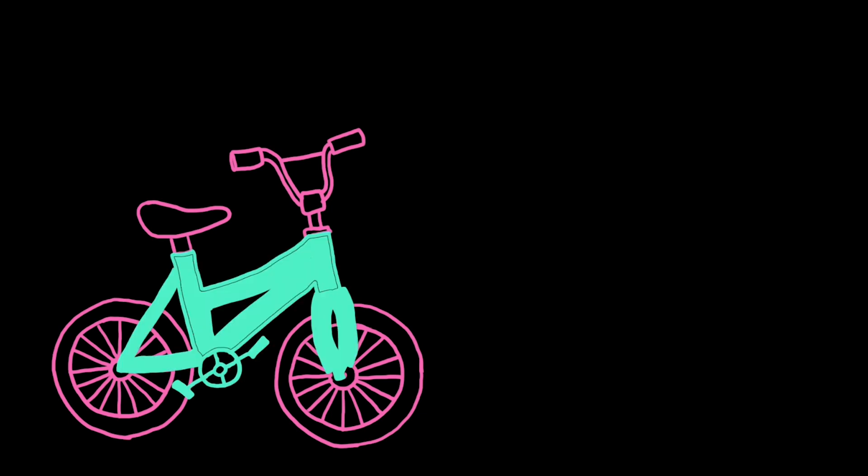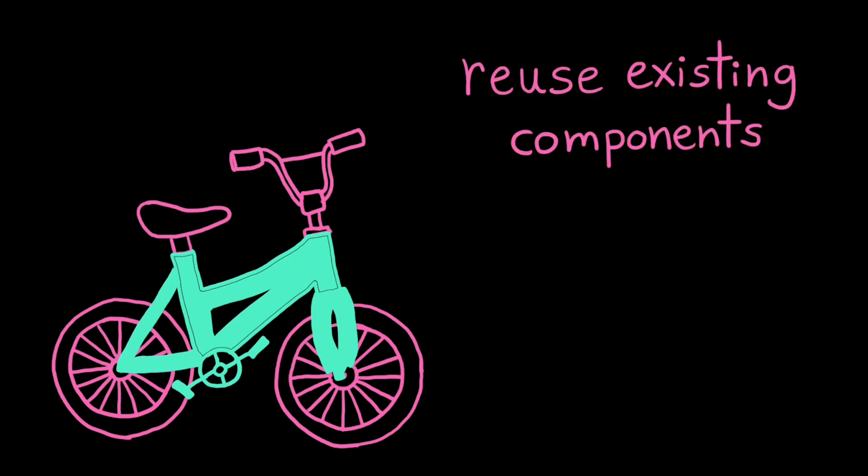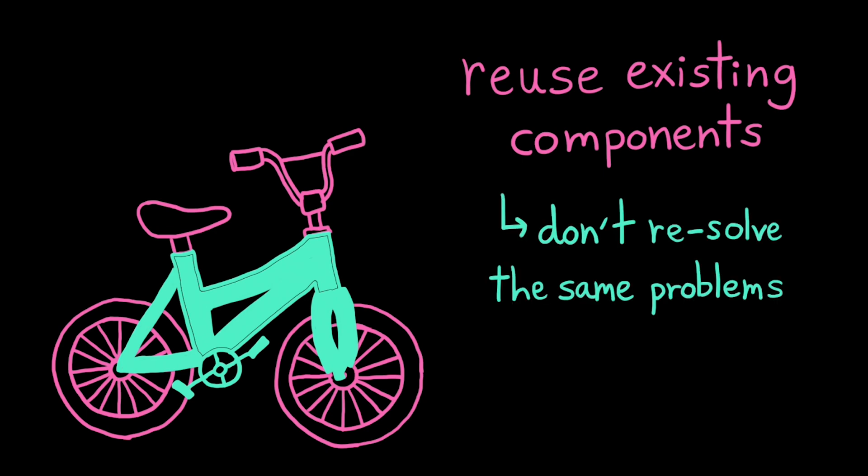If you were building a bike, you would probably go off and get a seat, a set of handlebars, a set of tires, and then assemble those pieces together. You wouldn't harvest your own rubber and try and forge a tire from scratch. With programming, we do the same. We can reuse components that other people have already built and made available. As programmers, our job is to assemble these components in unique and interesting ways, rather than spend time resolving the same problems over and over again.